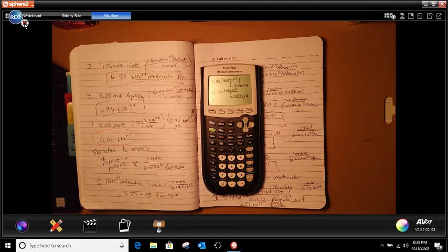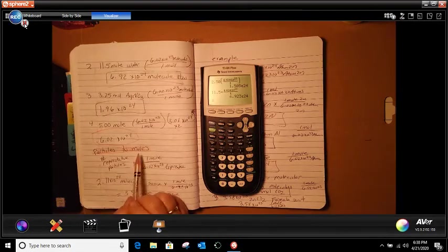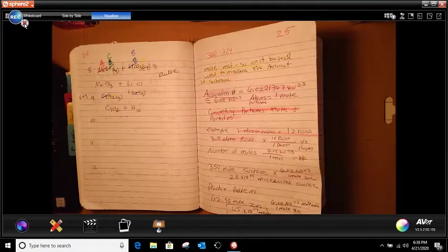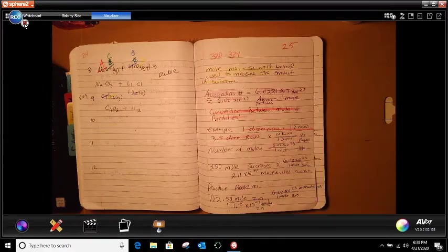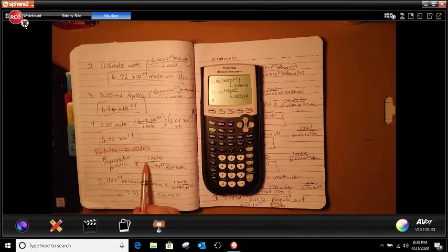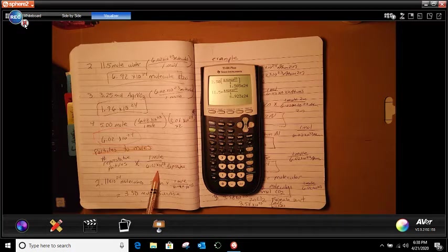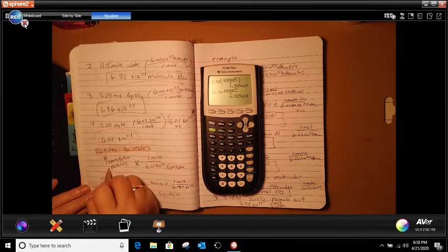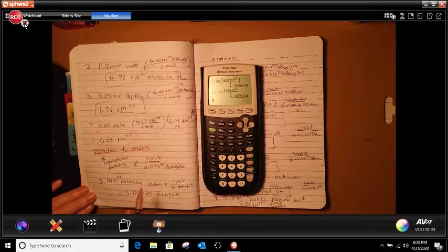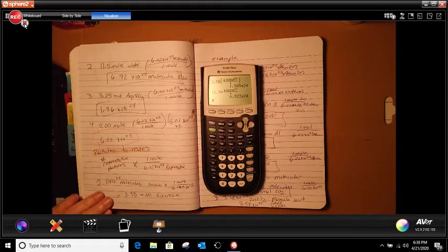So now what we're going to do is we're going to go into a new concept now. And this concept's different than what we have. So this is where we're taking particles to moles. Now over here, we did moles to particles. So what do you think? Number of represented particles times one mole. Look here. One's on the top this time and 6.02 is on the bottom. How do we know? Representing the particles will have to cancel out. Moles will be left and my answer will be in moles. So here we go again.